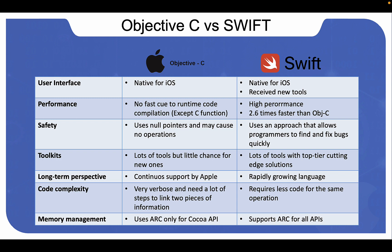From a safety perspective, Objective-C has a null pointer that can lead to errors where the application points to areas in memory where there is no operation. While this may seem useful for widening data access, it actually causes many errors. Swift, by contrast, was developed specifically to improve code security for iOS products.